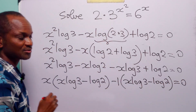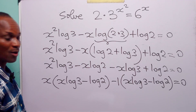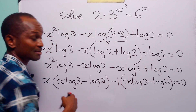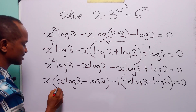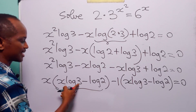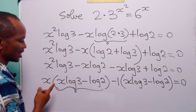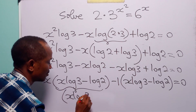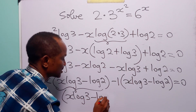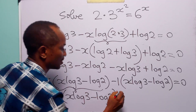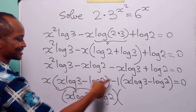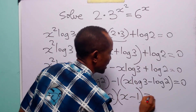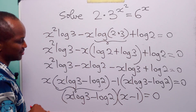Looking at the remaining two terms, we factorize out minus 1, because minus x log 3 divided by minus 1 gives us plus x log 3, while plus log 2 divided by minus 1 gives us minus log 2. Now we have two terms with a common factor of x log 3 minus log 2, so we have x log 3 minus log 2 multiplied by x minus 1, equal to 0.